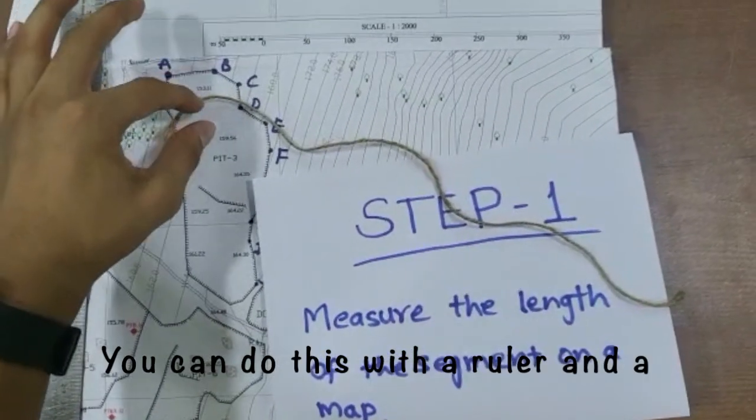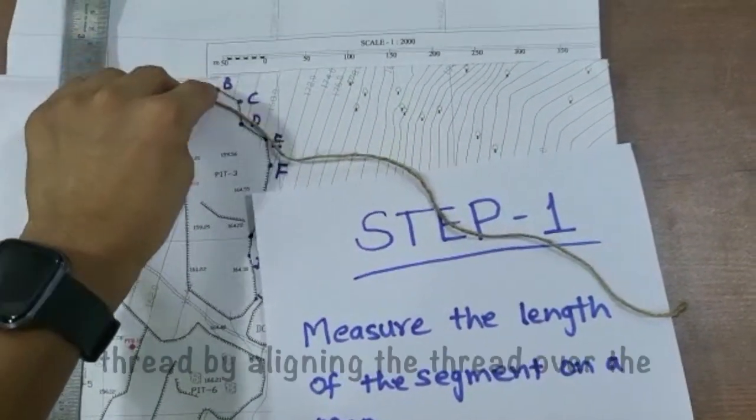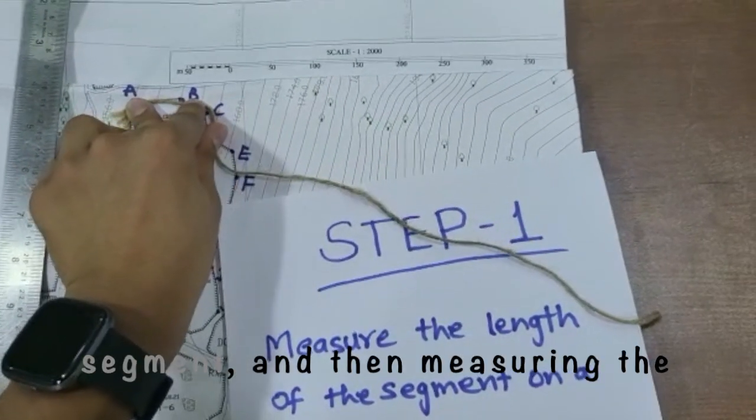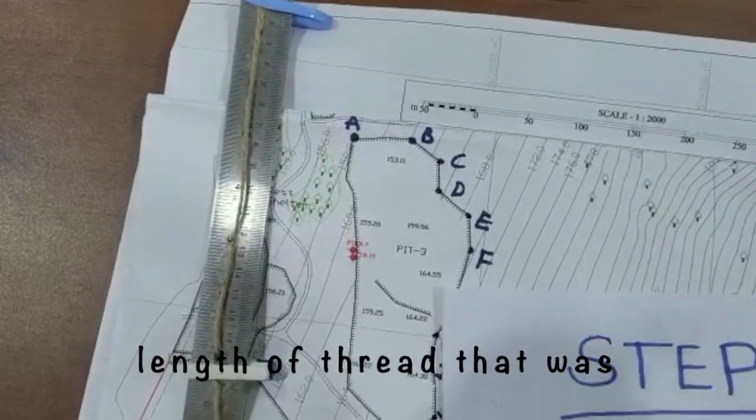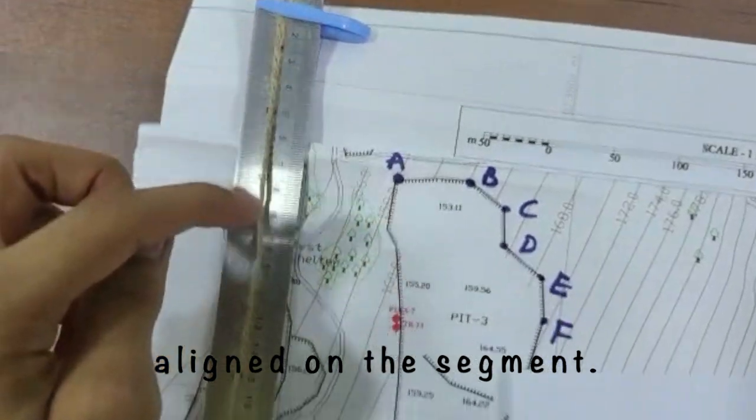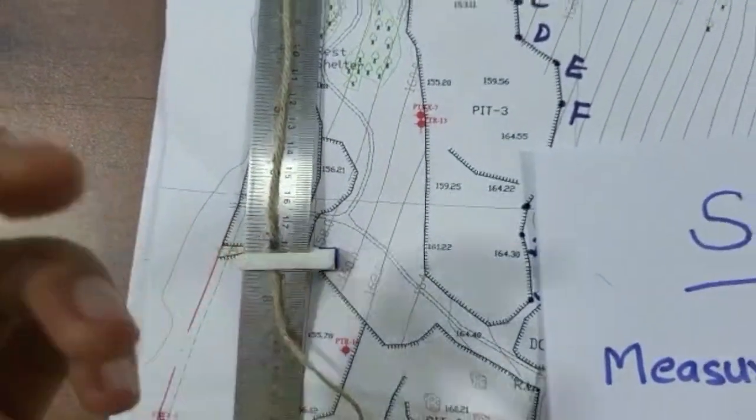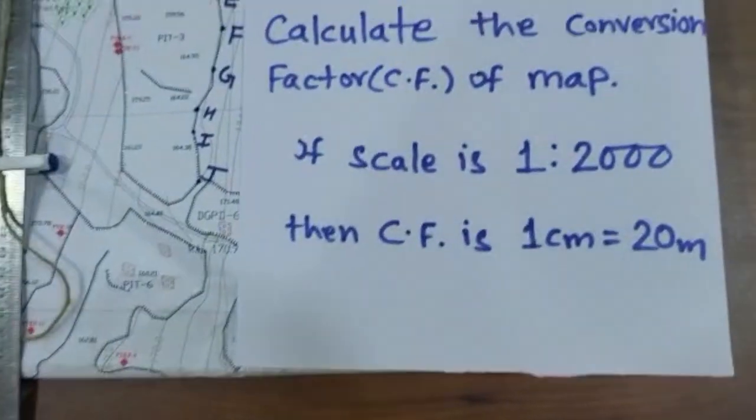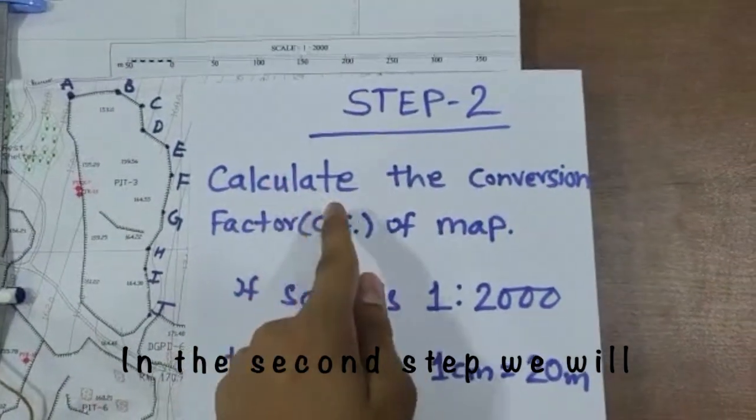You can do this with the help of a ruler and a thread by aligning the thread over the segment and then measuring the length of the thread that was aligned on the segment. In the second step, we will calculate